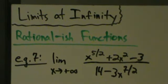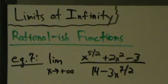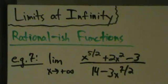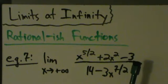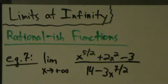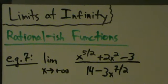So what do we do? Well, the shortcut is actually still going to work, but we have to be careful. We can't use the word "degree" because that officially only applies to polynomials. It doesn't make sense to talk about the degree of the top or bottom since they're not polynomials. But you can still talk about the highest power of x. So we can use the same rules — instead of saying degree, we say highest power of x. The rules are still the same; you just have to be careful with the terminology.